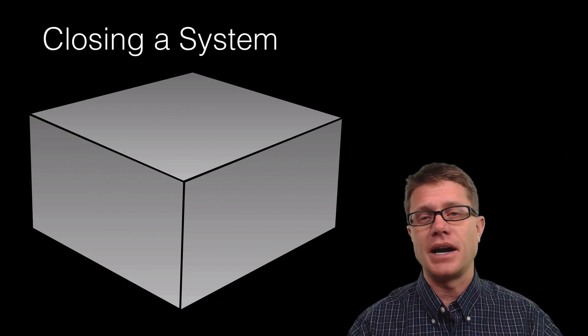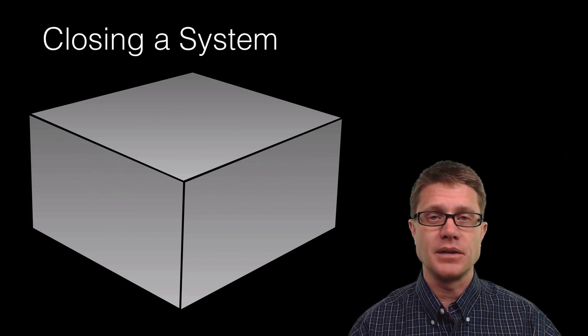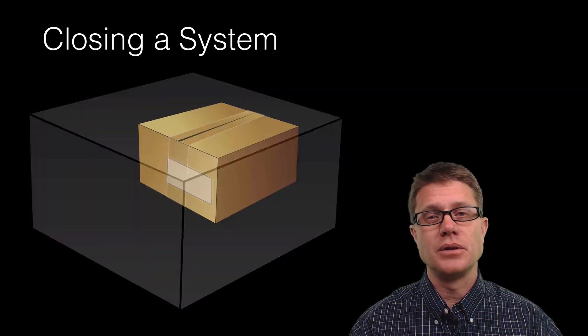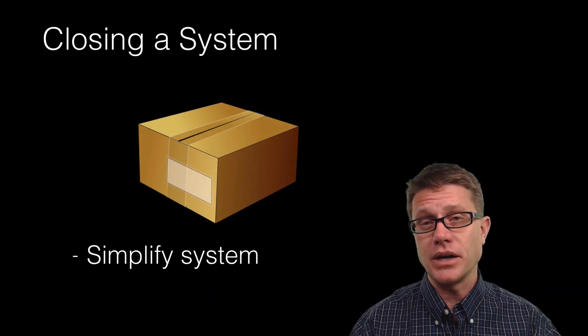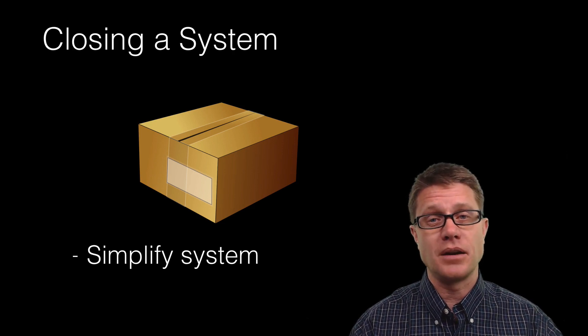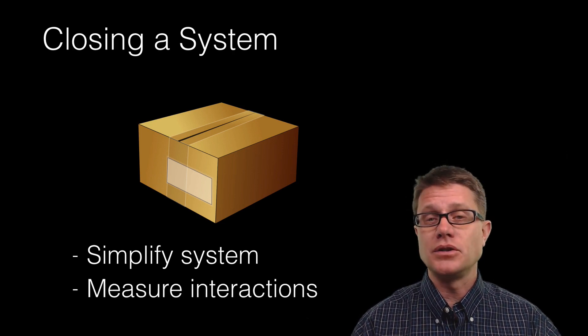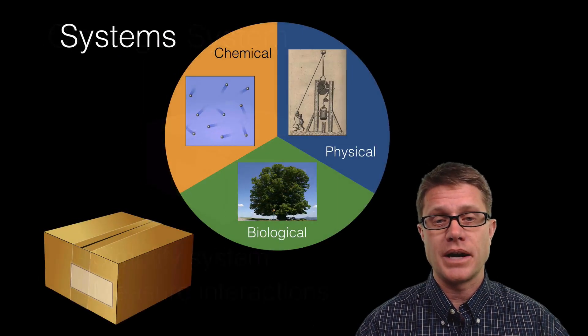But we are still never going to be able to isolate that system from the environment. And so in physics what we try to do is choose a system appropriately. We simplify the situation or simplify the system, and so we can minimize the amount of interactions in or out. But if we do, then we simply measure what those interactions are.